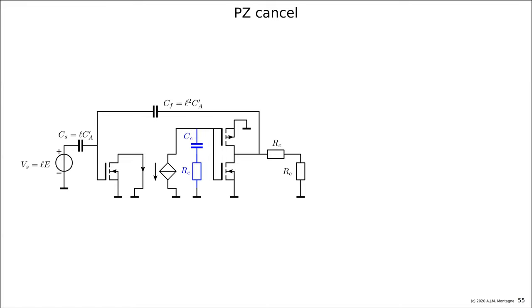At the frequency where the impedance of CC equals minus RC, I created a short and no current from the controlled current source is able to charge CGS of the MOSFET because there's effectively a short. So this complex frequency s equals minus one over RC times CC is the frequency of zero.